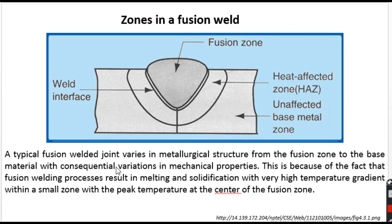Next, in weld metallurgy, we will talk about the different zones present in a fusion welded joint. As can be seen from the diagram, these are two plates on which a butt weld has been created. There are basically four regions: one is the fusion zone, which is the weld zone; another is the weld interface; next is the heat affected zone; and then we have the unaffected base metal.